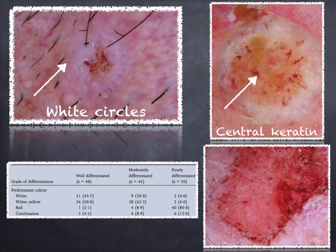We also have data regarding squamous cell carcinoma on the skin that help us differentiate well-differentiated squamous cell carcinoma from poorly differentiated tumors. More specifically, the more you see white, the more the tumor is well differentiated; the more the lesion is red, the less differentiated it is.